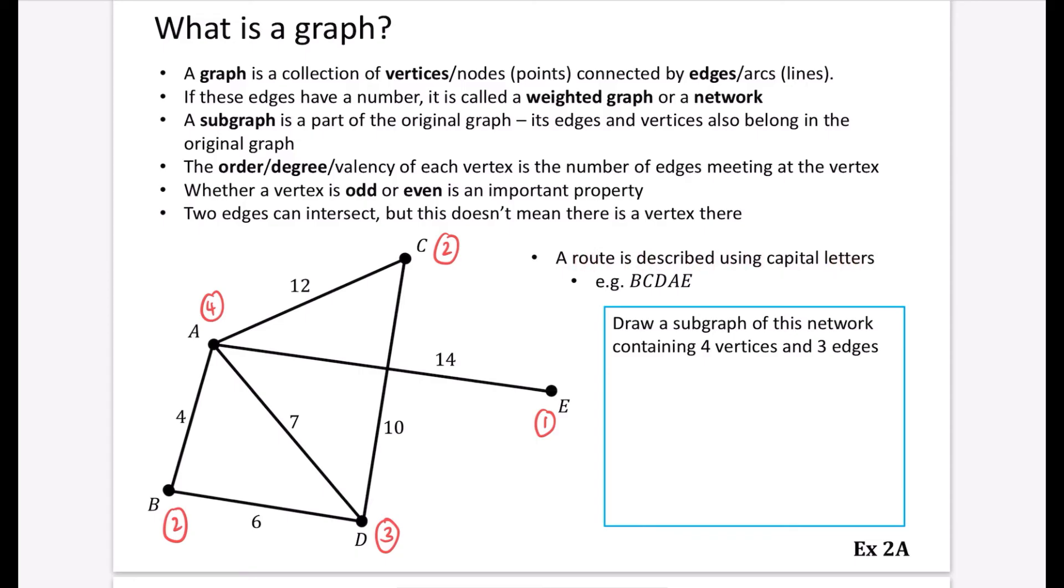So a route is described using capital letters. So for example, B, C, D, A, E is B going to C, going to D, going to A, going to E. I might need to have put an A in between there, but this isn't necessarily referring to this one. It's just saying that's how you would describe these things.